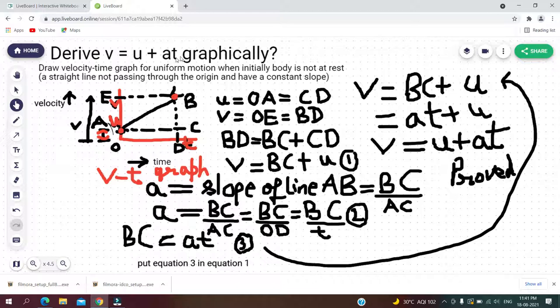So first point: when t is equal to 0, v is equal to u. So we will draw a point at this location where t is 0 and v is equal to u. So this will be the dotted point.